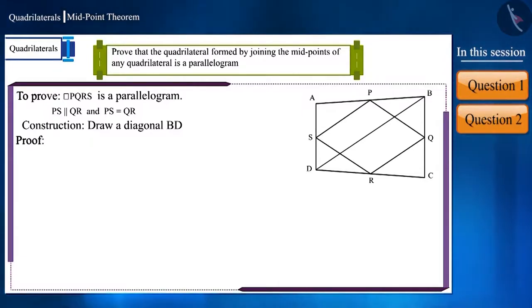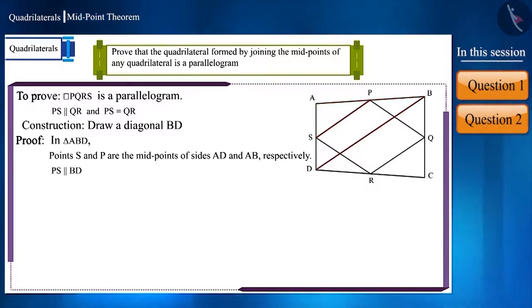We have two triangles. In triangle ABD, points S and P are the midpoints of sides AD and AB respectively. Hence, PS and BD are parallel and PS is half the length of side BD.